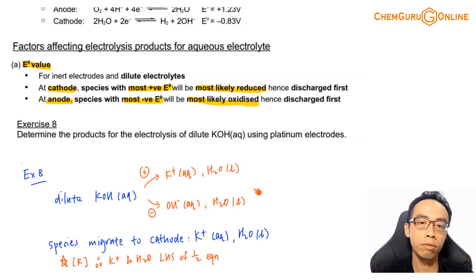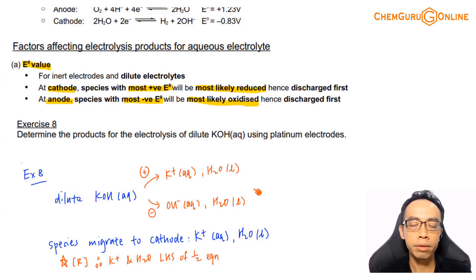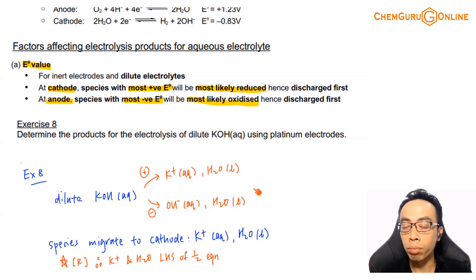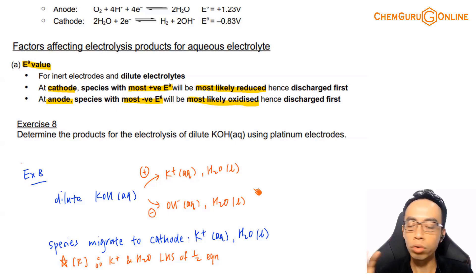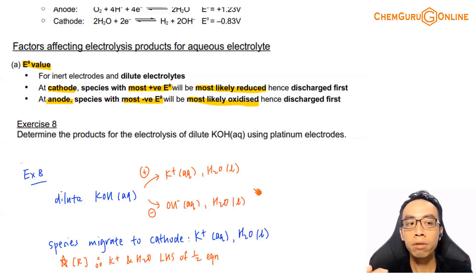If you're specific about the process, it's not so confusing. The thinking process is: decide which side of the half equation you want to find the species on first, then open the data booklet and find it. Don't do window shopping — don't open the data booklet and look left and right for all instances of K+. The recommendation is to decide which side of the half equation you want to find first; that way it's twice as fast.